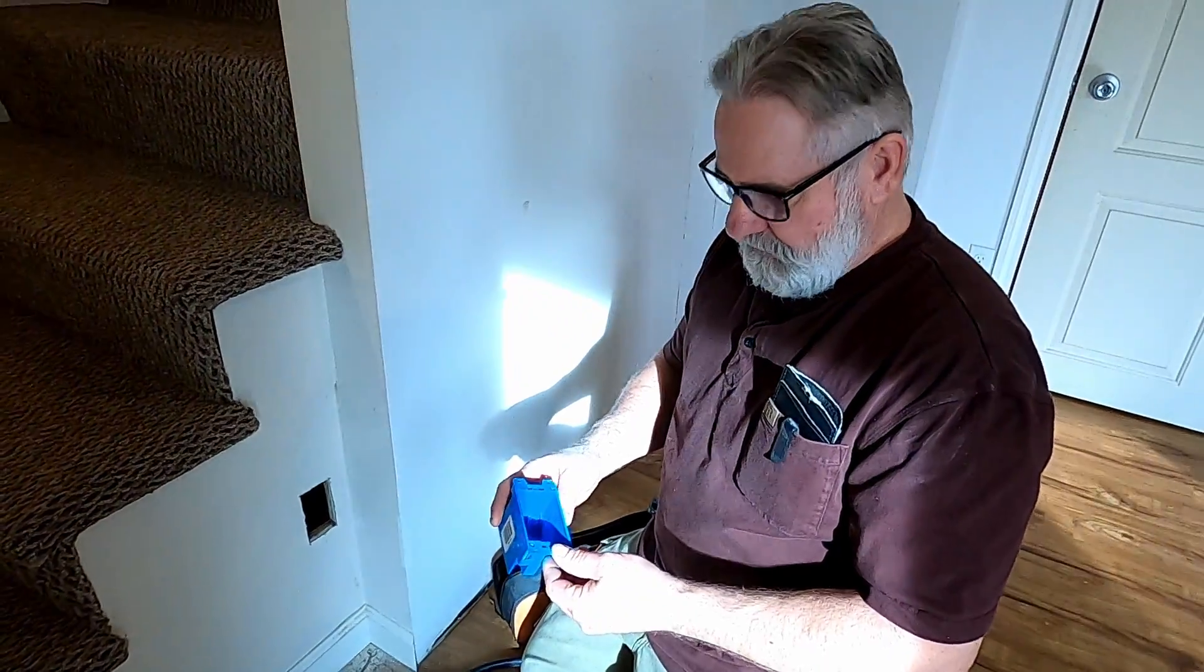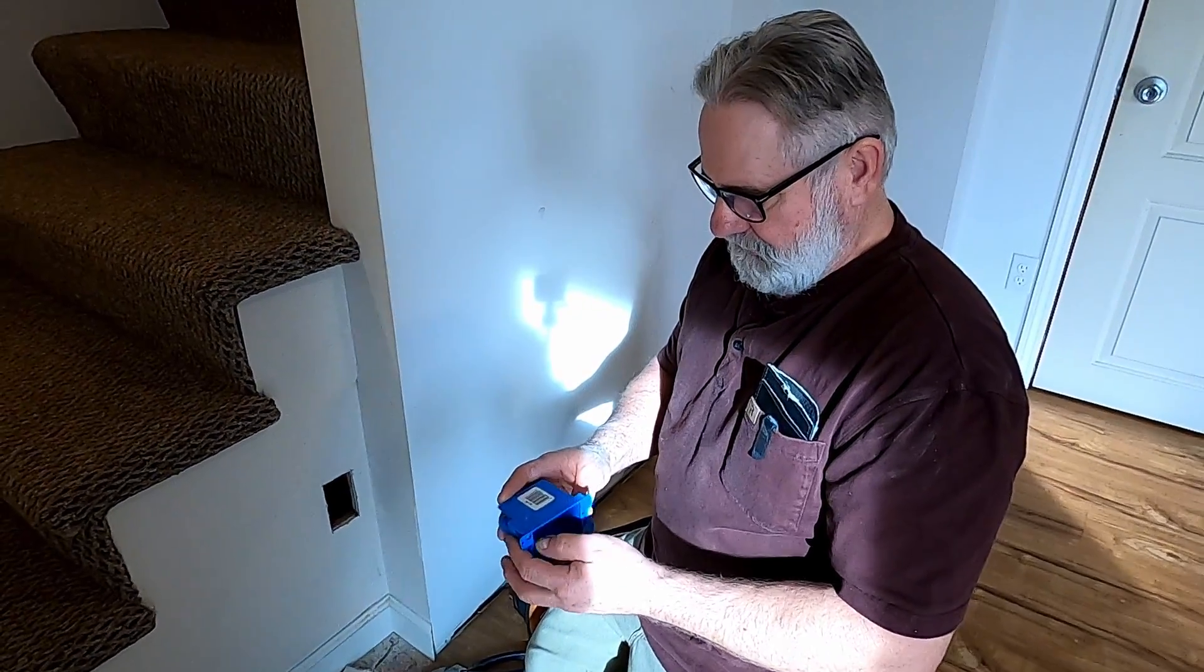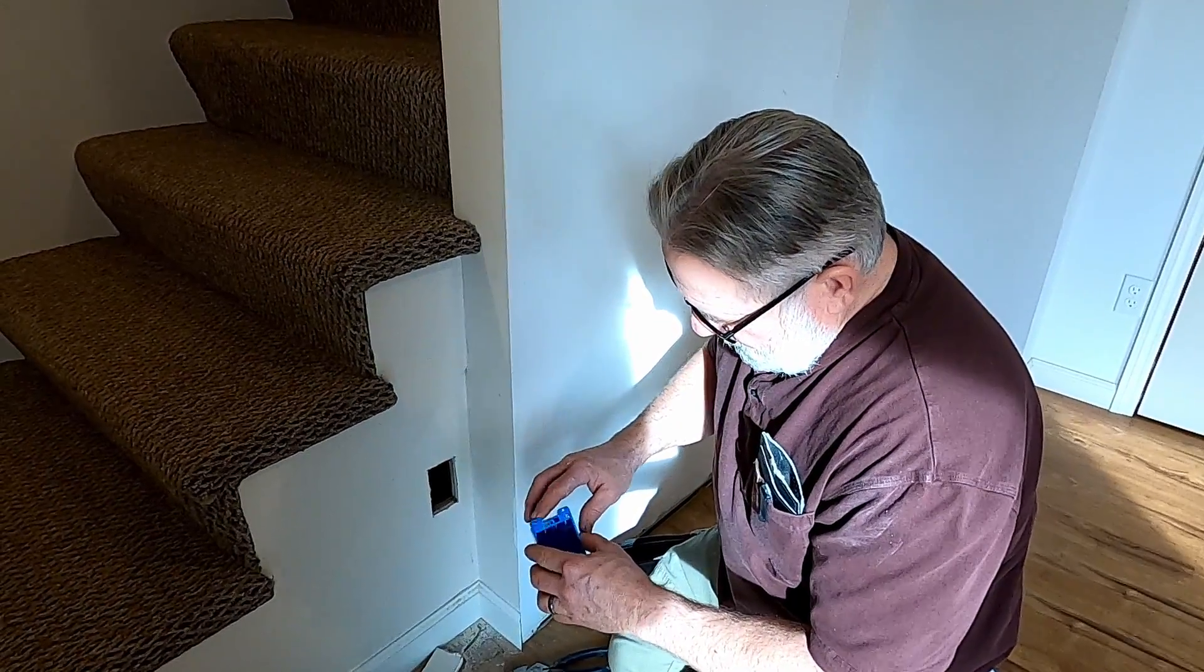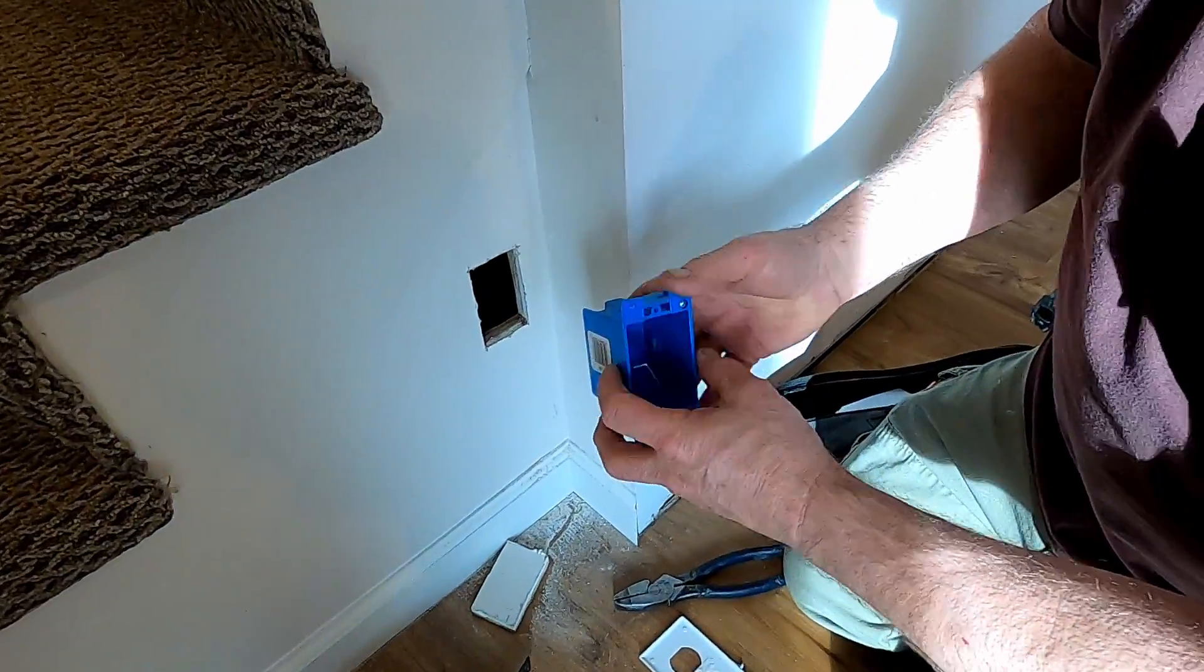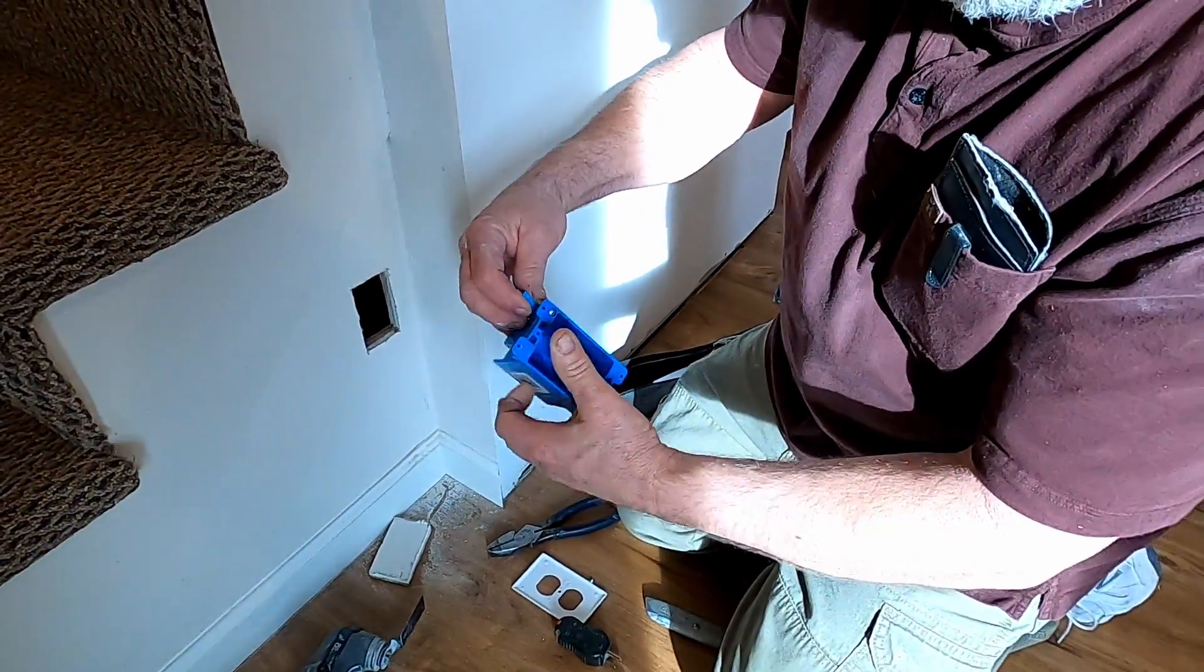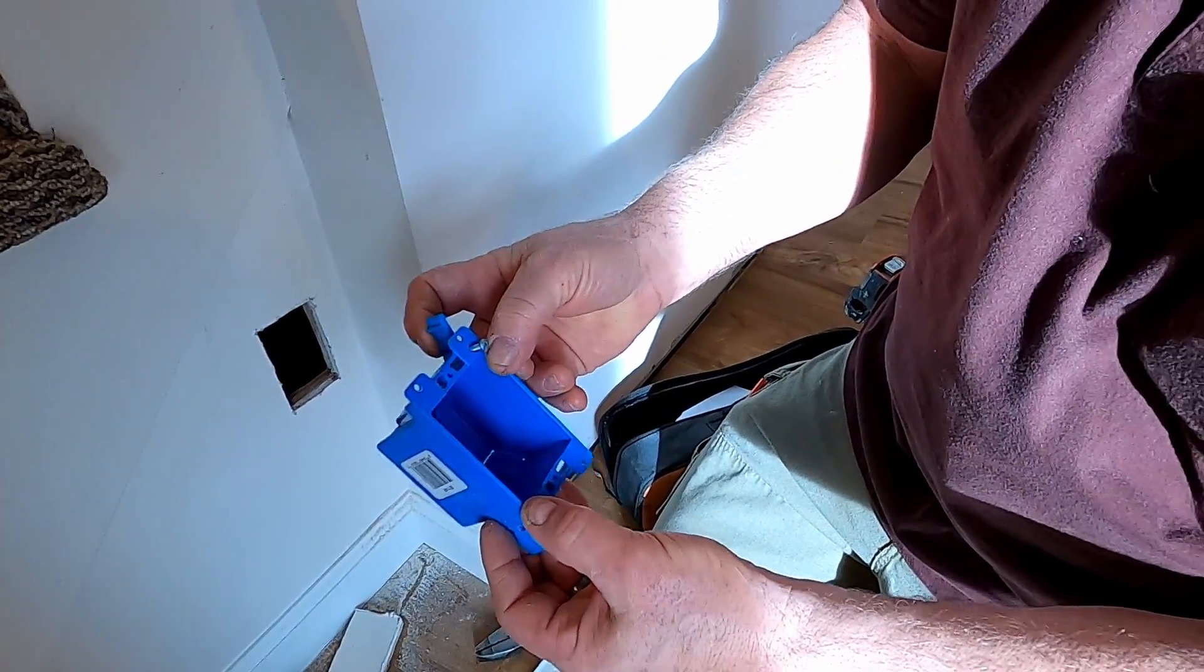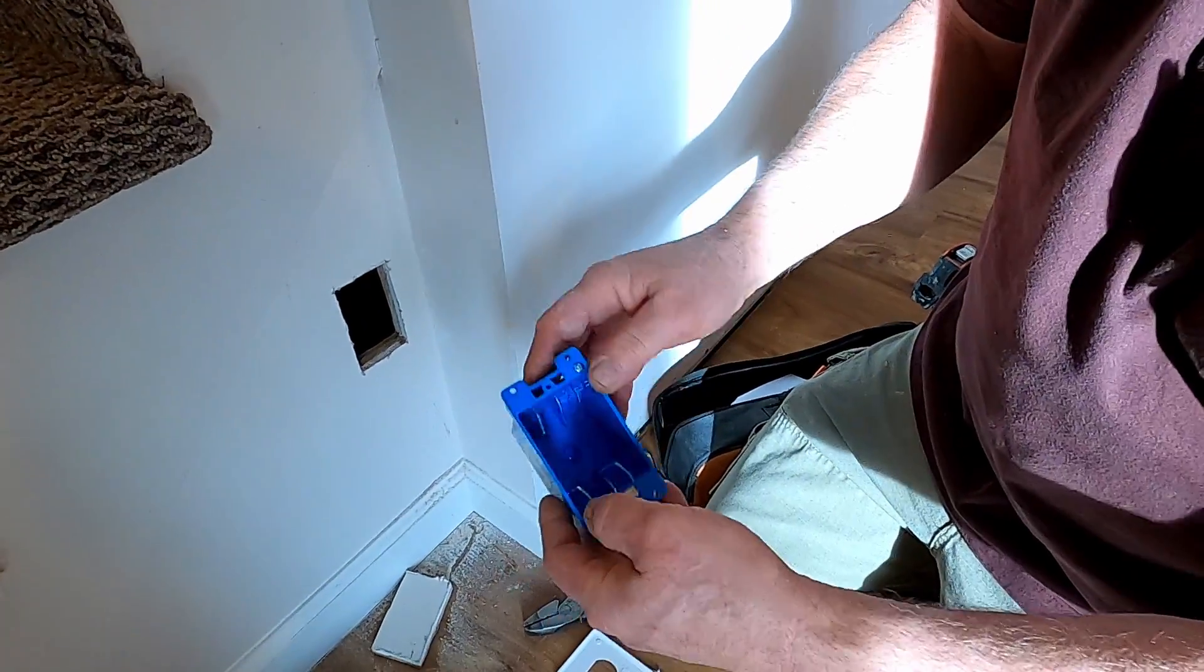This is the box I'm going to use. Some people call it an old work box or a cut-in box. You cut the hole out according to these dimensions so the box will fit right in. And then as you're screwing it in, these tabs will open up and pull against the wall in the back and hold it in. That's the way it's designed.